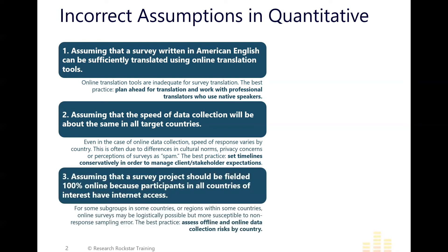The third mistake is assuming that your survey project can be fielded successfully online in all of your countries of interest because people in your target market will all have internet access. Just because you can do something doesn't mean you should. There are definitely some subgroups in some countries and some regions where logistically they have access and can do online surveys, but if you assume online surveys with those populations it's going to have a negative impact on your data quality.